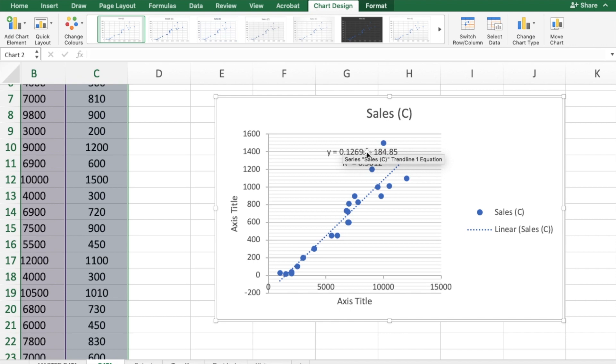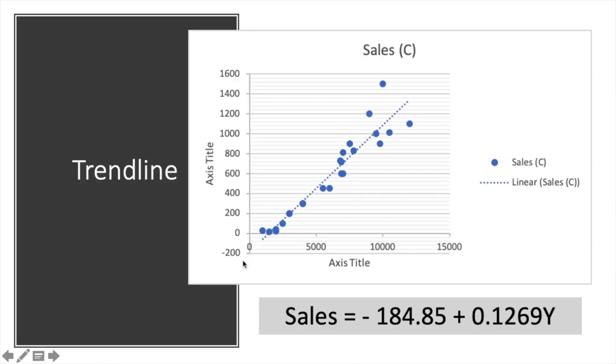So now let's interpret these values. So we can see from the trendline here, Excel has actually generated a function. So we can see sales equals to, here is the intercept, which is negative 184.85, plus the slope is 0.1269Y. So how do we use this model? And how can we get information out from this model?